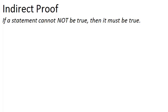An indirect proof is different because it is indirect and it relies on this principle here. If a statement cannot not be true then it must be true. So think about what that means. If you can show that something cannot not be true that means it must actually be true.